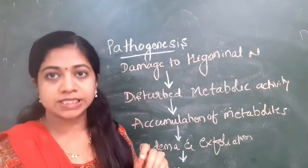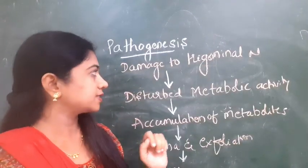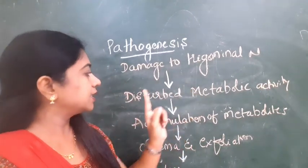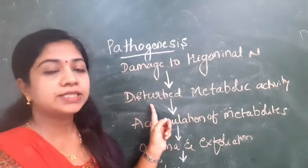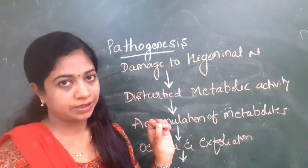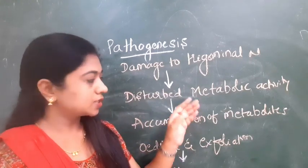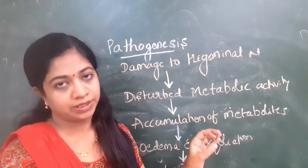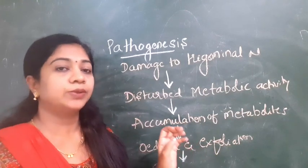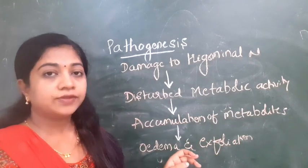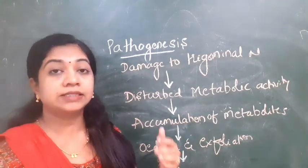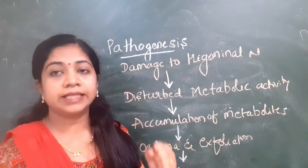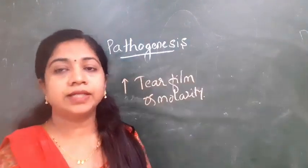Another theory explaining the pathogenesis is that whenever there is damage to the trigeminal nerve, there is disturbance in the metabolic activity of the corneal epithelial cells. There is accumulation of metabolites in the corneal epithelium which subsequently leads to edema of the corneal epithelial cells as well as exfoliation or shedding of the corneal epithelial cells, thereby leading to ulcer formation.